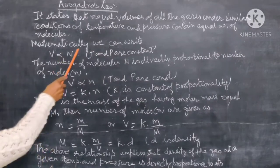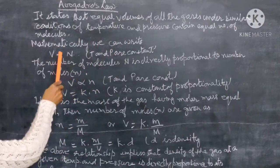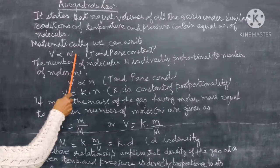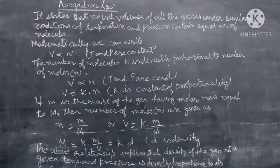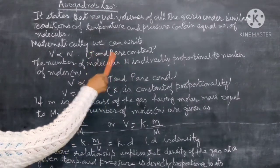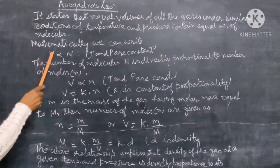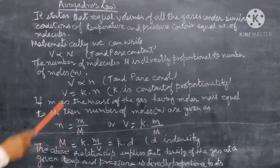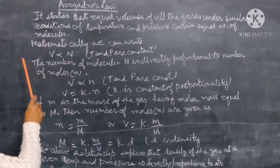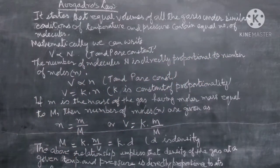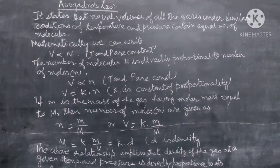Mathematically, we can write that the volume of the gas is directly proportional to the number of molecules N when temperature and pressure are constant. The number of molecules N is directly proportional to the number of moles, because as the amount of gas increases, there is an increase in the number of moles. So N is directly proportional to the number of moles n.